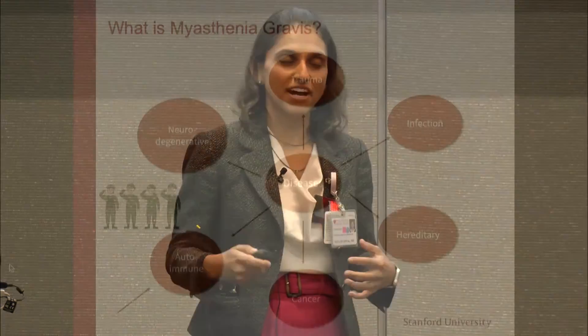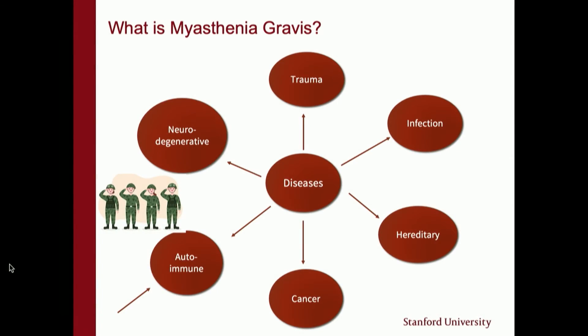What happens in autoimmune diseases? There's a dysregulation — something is off, and the body starts to attack itself. This is what is happening in myasthenia gravis. The good guys, the army supposed to be fighting the bad guys, actually starts to fight itself. And if you understand that, then you know that to fix the disease, you have to suppress your immune system. That's where the therapies part of our session will come in.